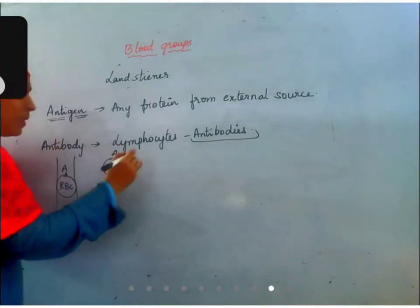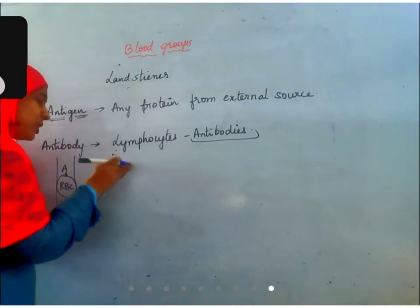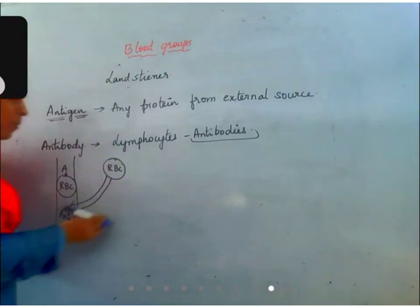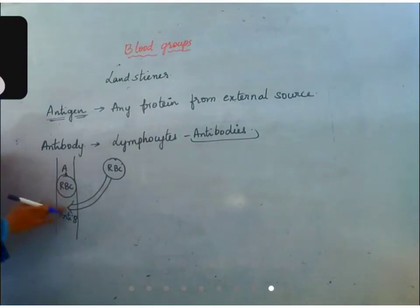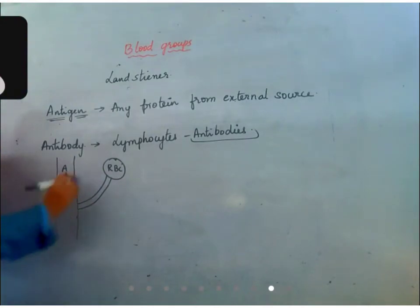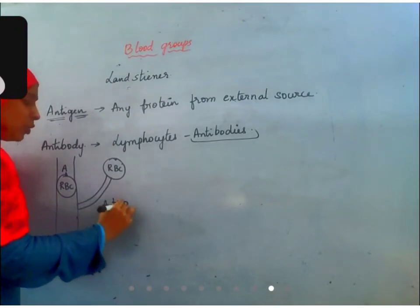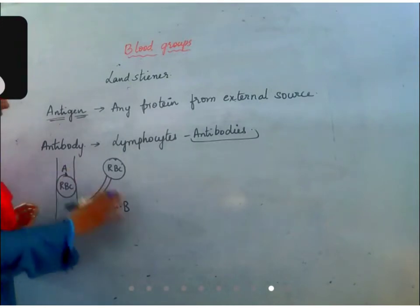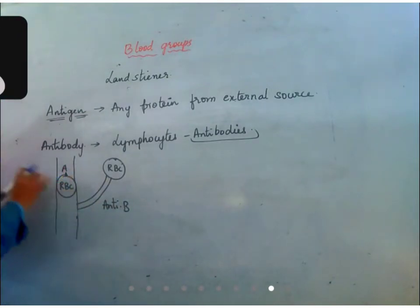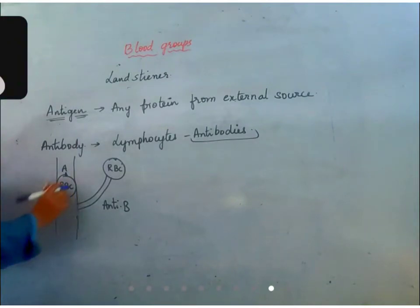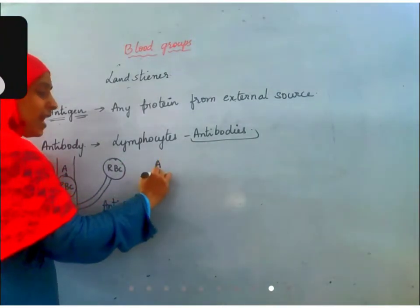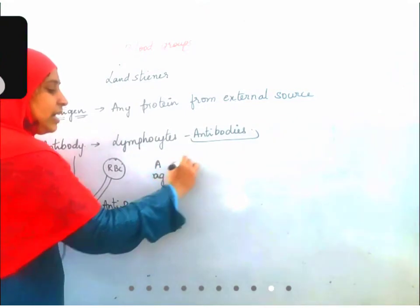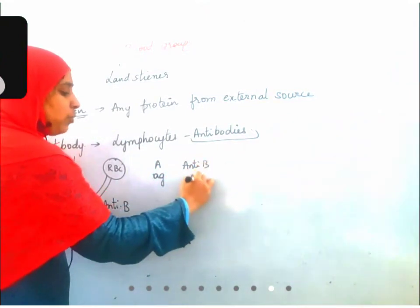If O blood group is administered, there is no antigen, so the only antibodies that could possibly be produced are anti-B antibodies. Whatever blood group you administer, either anti-B antibodies will be produced or nothing will be produced. That is why when you write A blood group, you write A as antigen and anti-B as antibodies.